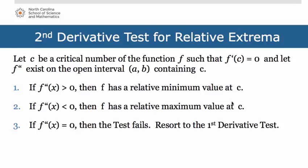Think about what the second derivative information is telling us. If the second derivative is greater than 0, that tells us the curve is concave up and we get a minimum. If the second derivative is less than 0, that tells us the curve is concave down and we get a maximum.